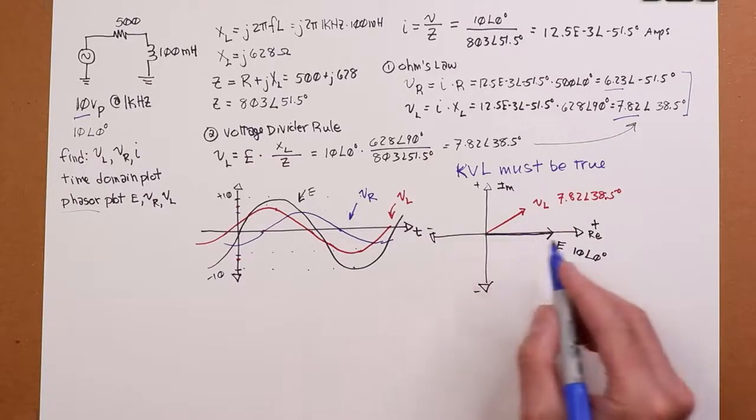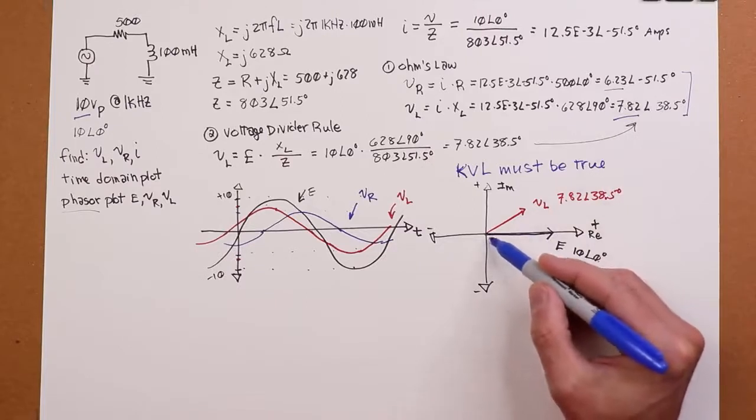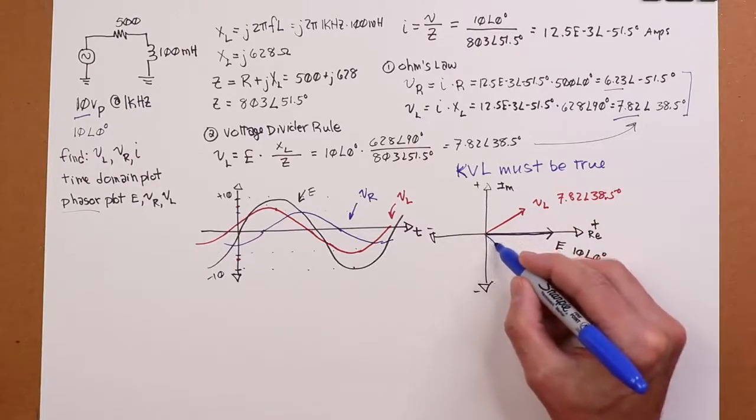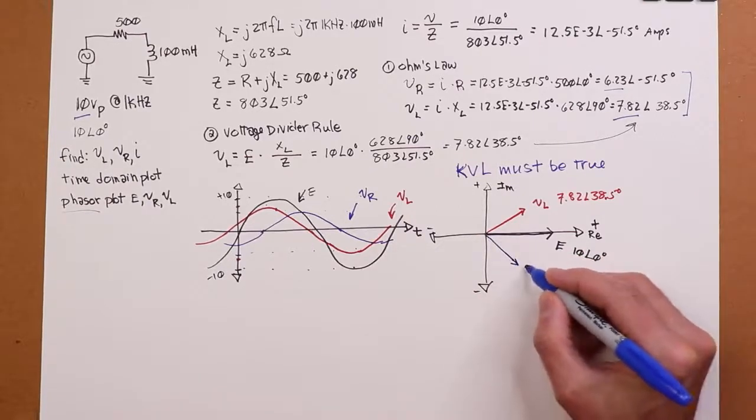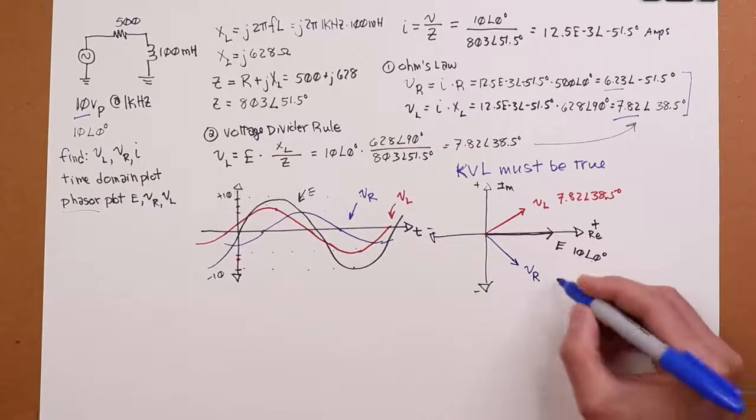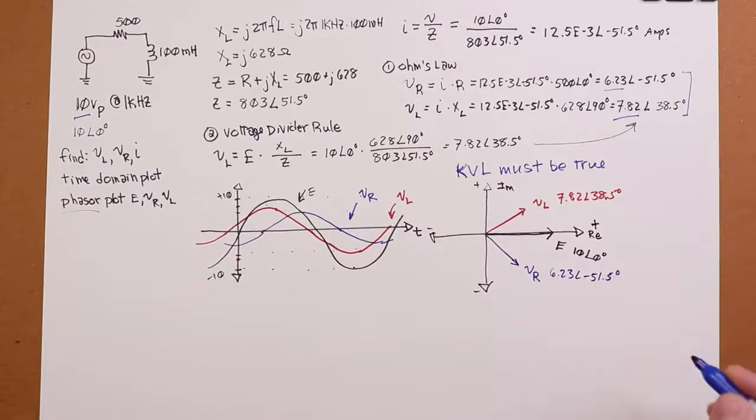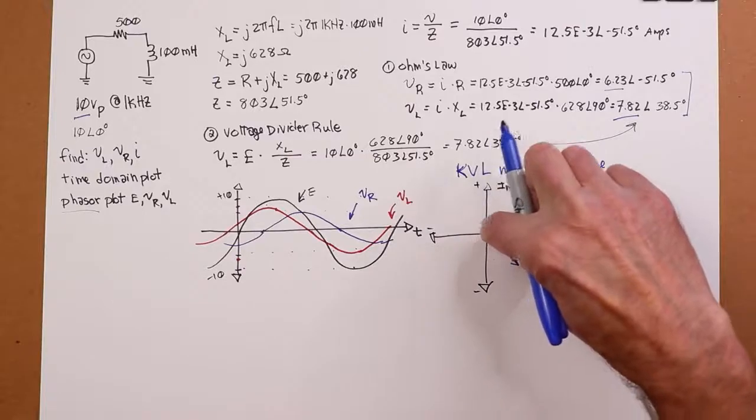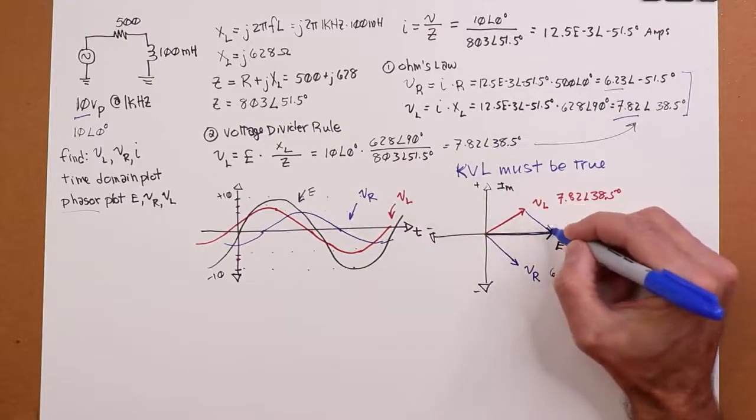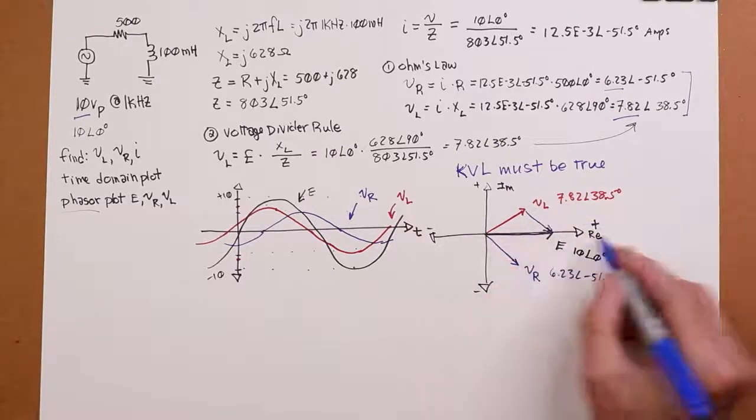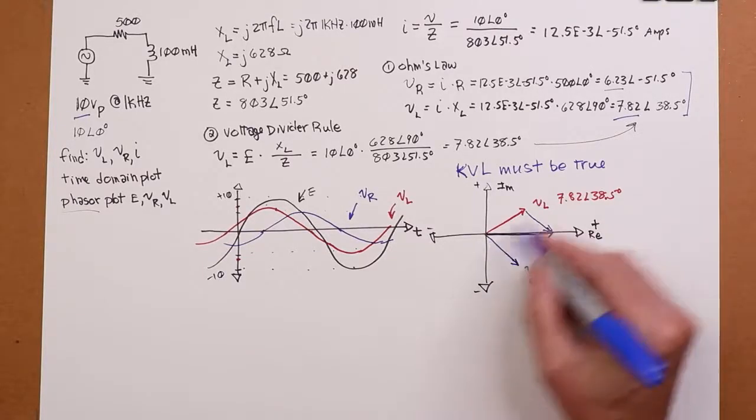Now, the VR. The VR, 6.23, a little bit shorter. And sitting at negative 51. So, negative 45 would be like this. It's a little bit more. And it's probably something like this. Just trying to eyeball this. So, that VR, 6.23, at an angle of negative 51.5. This might be a little bit easier to visualize. Because now you could imagine picking this VR up to a head-to-tail thing. If you translated this up, you can see, oh, yeah, that does add up to E. That does add up to 10 at an angle of zero. So, there's my phasor representation, these three pieces.